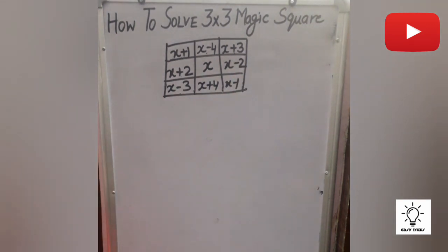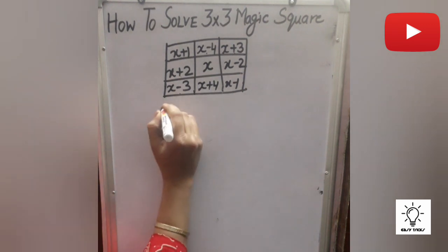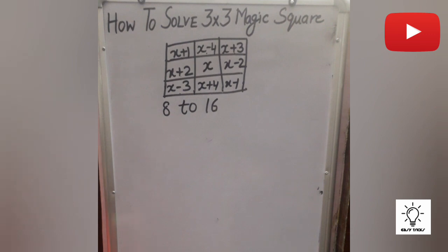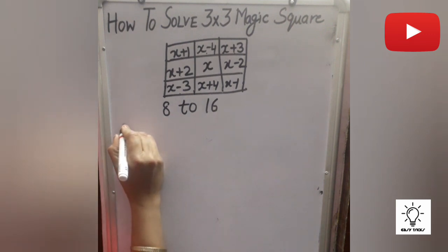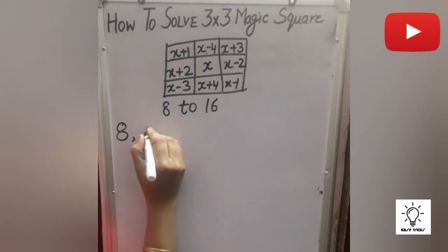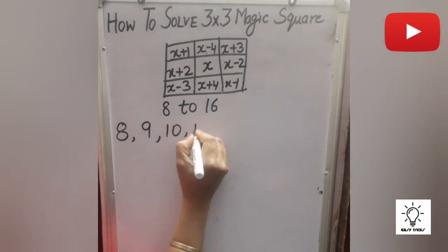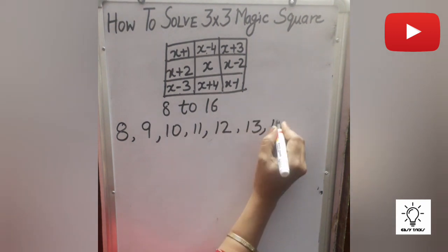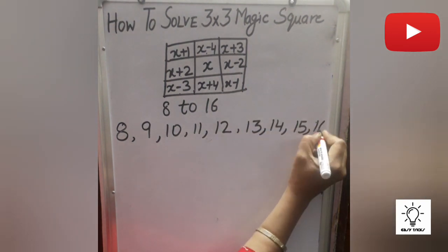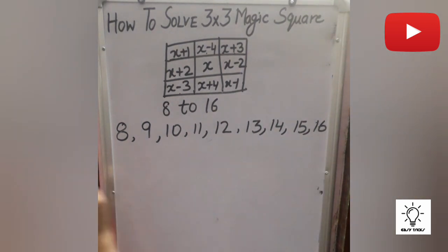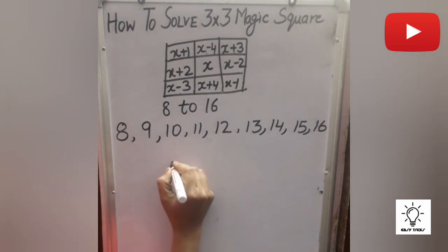Suppose we take numbers from 8 to 16. First we write our numbers in ascending order — smallest to greatest: 8, 9, 10, 11, 12, 13, 14, 15, 16. These are the numbers we have to put in the magic box.